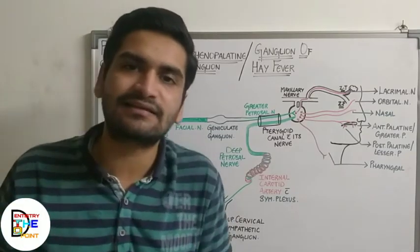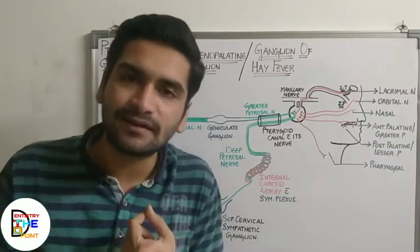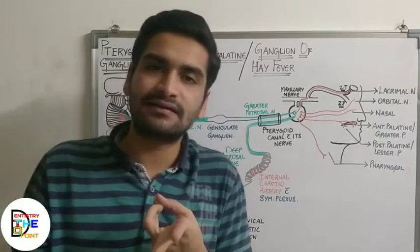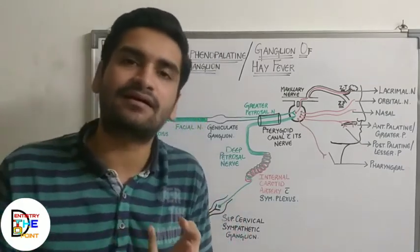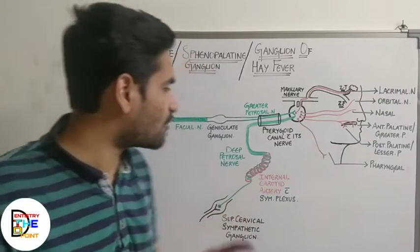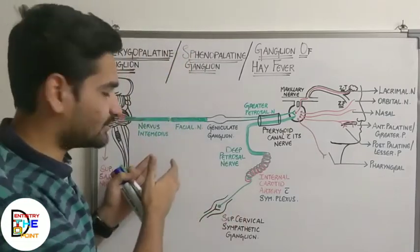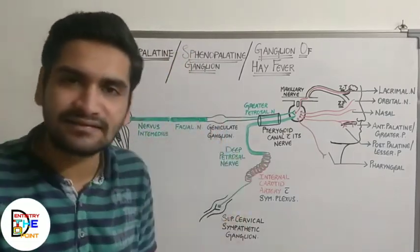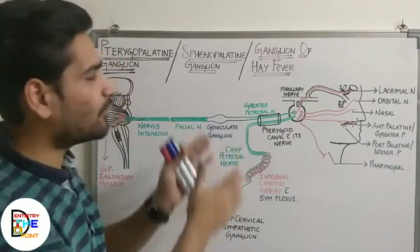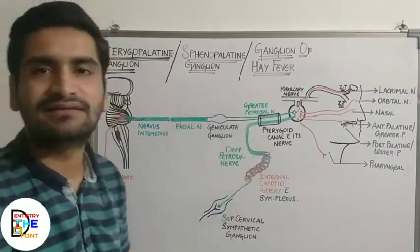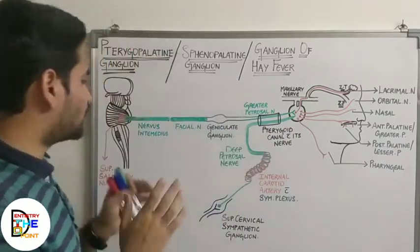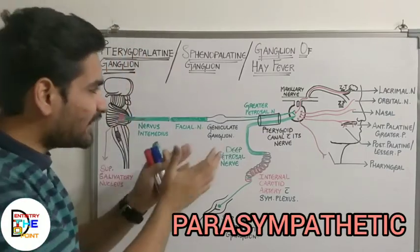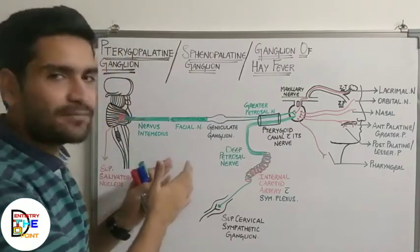You need to study three things about the ganglion: first is its parasympathetic or secretomotor supply; second is its sympathetic supply; and third is its sensory supply. We are going to study all three supplies — parasympathetic, sympathetic, and sensory — in a single diagram, along with the branches of the ganglion. We'll start with the parasympathetic supply, so the preganglionic fibers...